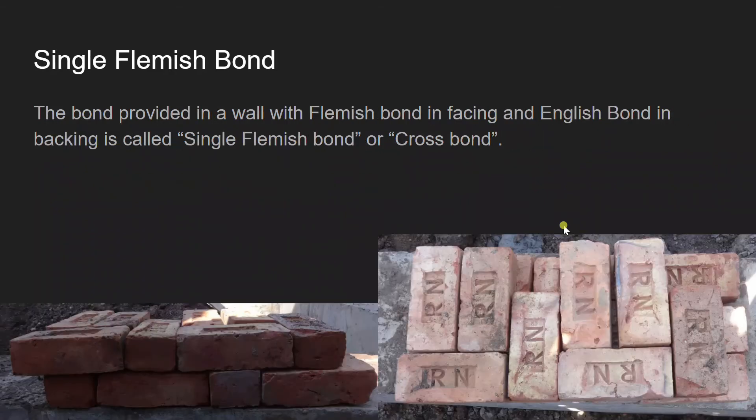The next type in Flemish bond is single Flemish bond. The bond provided in a wall with Flemish bond in facing and English bond in backing is called single Flemish bond, or cross bond. This definition can get clearer by looking at the image given below.